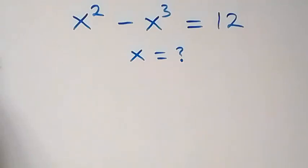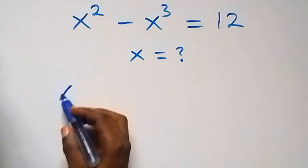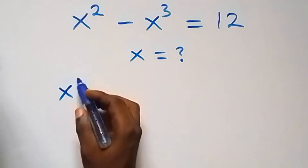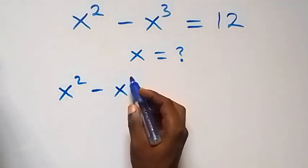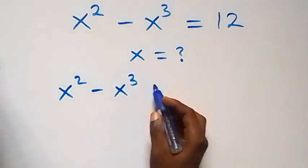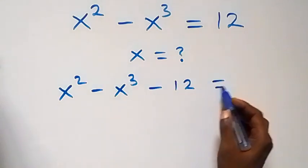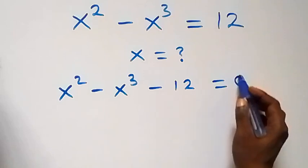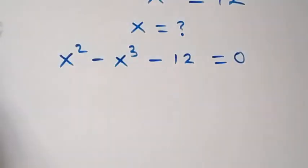Hello, you are welcome. How to solve for x in this nice algebra problem. Let's take 12 to this side — then we have x squared minus x cubed minus 12 now equals to zero.